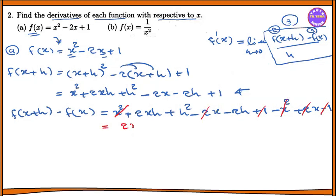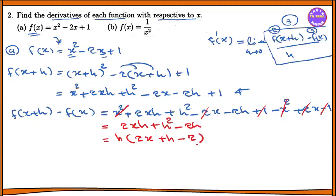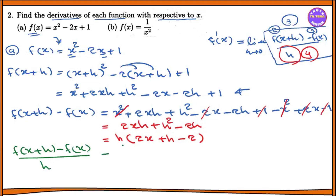This simplifies to 2xh plus h squared minus 2h. Dividing by h, we get f of x plus h minus f of x by h equal to h into 2x plus h minus 2 by h.